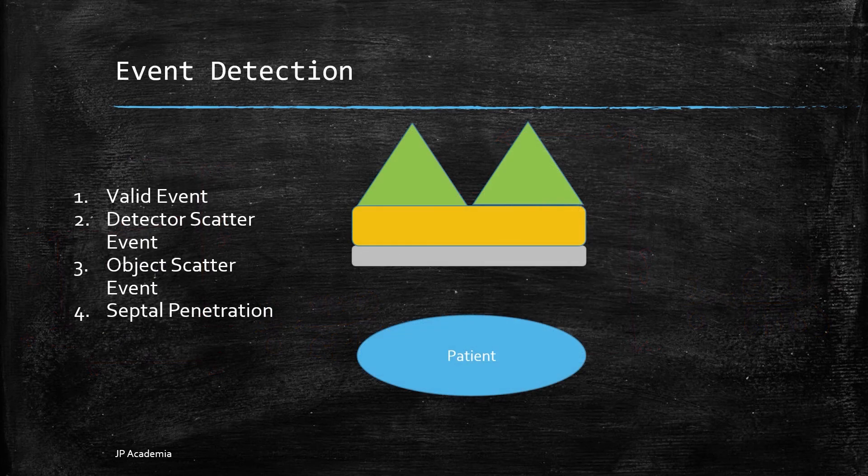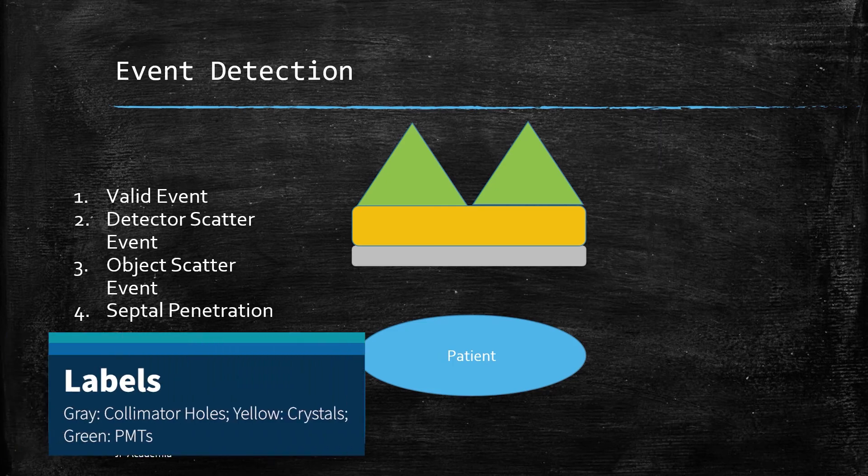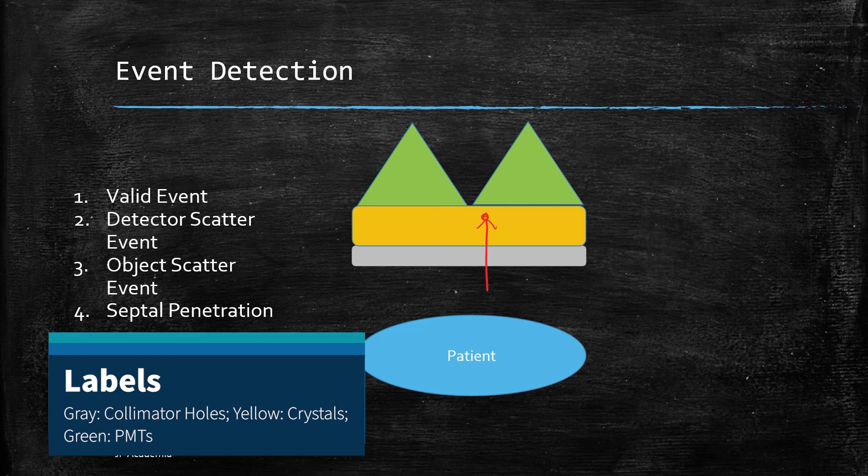There are four types of event detection that may be detected by the gamma camera, illustrated here. First, we have the valid event. In this event, a gamma ray is emitted parallel to the collimator holes and it passes through the hole until it reaches the sodium iodide crystals, depositing all of its energy at a single location only.